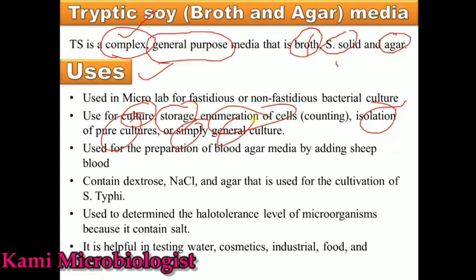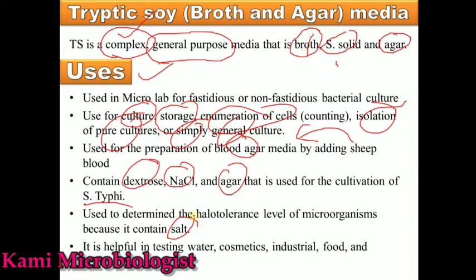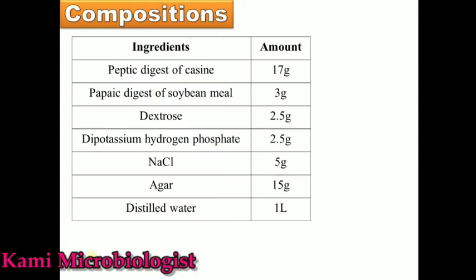We can also use this media for the preparation of blood agar medium. After sterilization, if we add sheep blood, then this media will be converted into blood agar media. This media contains dextrose, sodium chloride, and agar. Due to the presence of these materials, it is used for the cultivation of Salmonella typhi. The salt content allows identification of the tolerance level of microorganisms. We can also use this media to isolate microbes from water, cosmetics, industrial samples, food, and beverages.